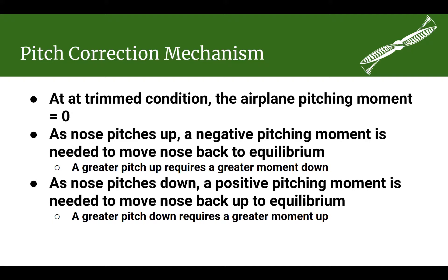What happens if we have a disturbance and the nose pitches up? What we want is a pitching moment that causes the nose to come back down to our trimmed condition, and that would be a negative pitching moment. The more the nose pitches up, the more pitching moment we want to correct it. As it gets closer and closer to our trimmed condition, that pitching moment gets smaller and smaller until it reaches zero — putting us back in our zero pitching moment, trimmed condition.